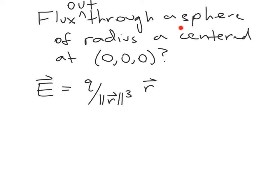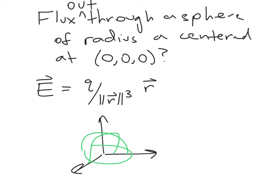What if we want the flux out through a sphere of radius A centered at the origin? This sphere is not a solid region — it's just the sphere — and it would be nice to use the divergence theorem. But to apply the divergence theorem we would need to integrate over the solid region enclosed by this surface, and unfortunately the origin is in that solid region, where the divergence isn't defined. So for a sphere of radius A centered at the origin, we're not going to be able to use the divergence theorem; we have to compute the flux directly.